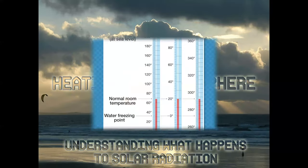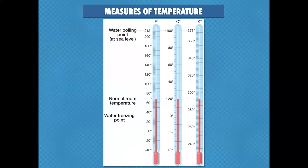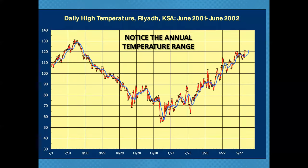Heating the atmosphere — we have measures of temperature, and temperatures have not only diurnal rhythms but seasonal rhythms. This chart shows temperatures in Saudi Arabia from June 2001 to June 2002 — it was as hot as 132 degrees that year and as cold as about 54 degrees. 54 may not seem very cold, but compared to 132 it is.